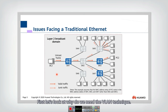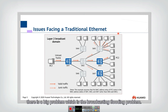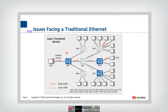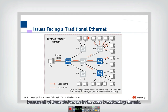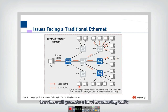First, let's look at why we need the VLAN technique. If we look at Layer 2 Ethernet, there is a big problem, which is the broadcasting flooding problem. Assume that there are a lot of computers and switches here. Because all of these devices are in the same broadcasting domain, the broadcasting packet will be transmitted to all the computers, generating a lot of broadcasting traffic which will degrade the performance of the total network.